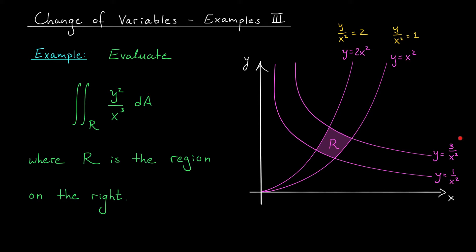Likewise, with my hyperbolas, I could rewrite these equations as x squared y equals 1 and x squared y equals 3. So maybe it makes sense to set u to be y over x squared and set v to be x squared y.